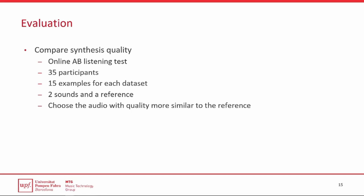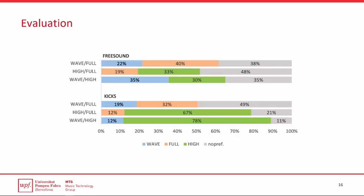The participants of the test were presented with 15 examples from each of the datasets. Each example had two options, A and B, from two of the models used for the dataset, along with a reference ground truth for the audio. There were five examples each from each of the three pairs. The participants were asked to choose the audio clip which was closest in quality to the reference audio. A clear preference for the high model can be seen, especially for the kicks dataset.